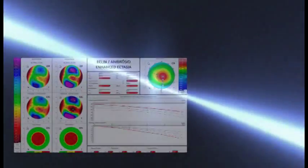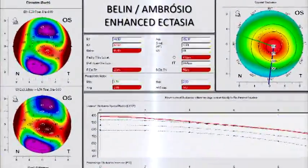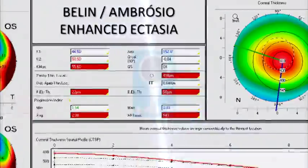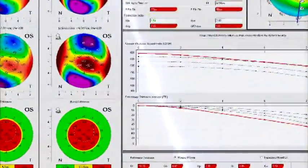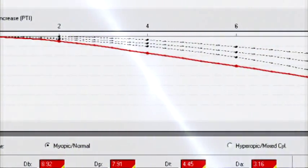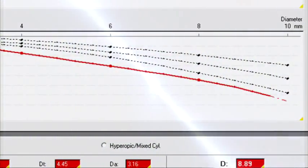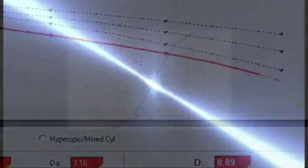The combination of corneal elevation and tomographic thickness evaluation is the basis for the Belin-Ambrosio enhanced ectasia display available on the Pentacam. The standard deviation from normality towards ectasia is calculated for multiple parameters, which are combined into the final BADD using logistic regression analysis for optimizing detection of ectasia.